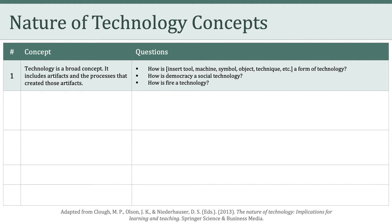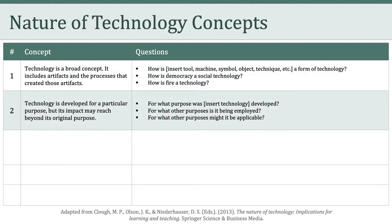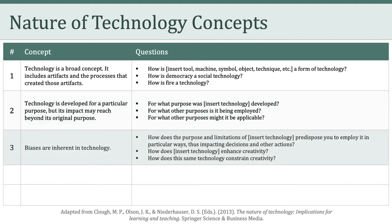You should challenge yourself and ask how any given thing, object, process, or technique is or is not a technology. The second concept is that technology is developed for a particular purpose, but its impact may reach beyond its original purpose. We can ask: for what purpose was a given technology developed, and for what other purposes might it be applicable? The third concept is that biases are inherent in technology. We want to continuously ask how the purpose and limitations of a given technology predispose us to employ it in particular ways, thus impacting decisions and other actions.